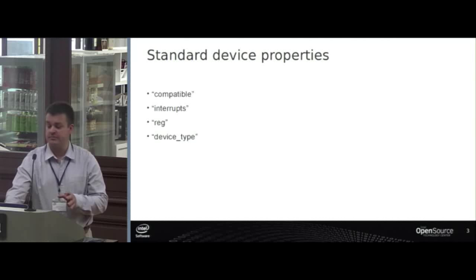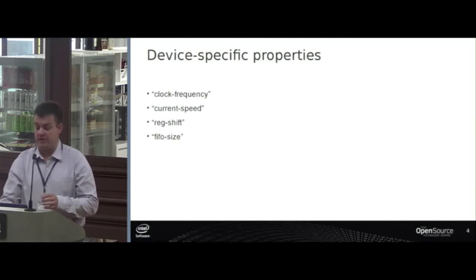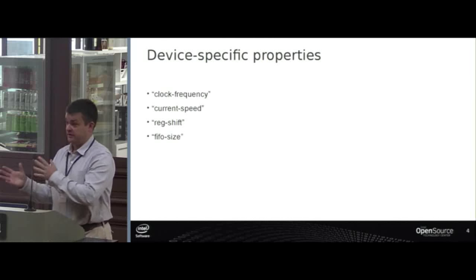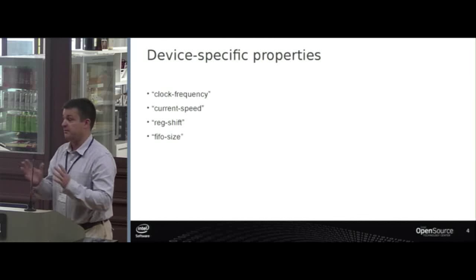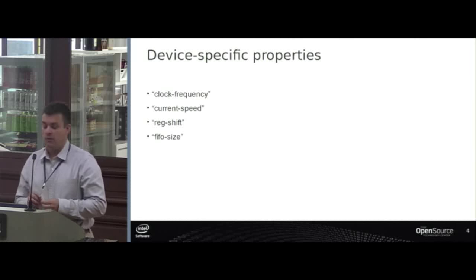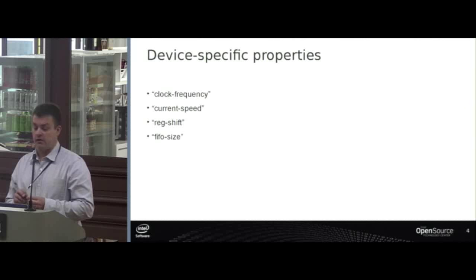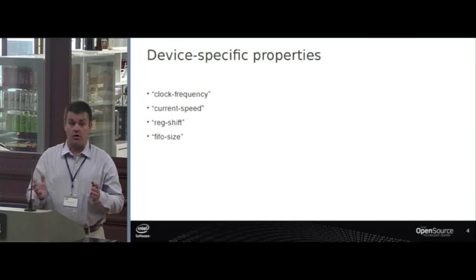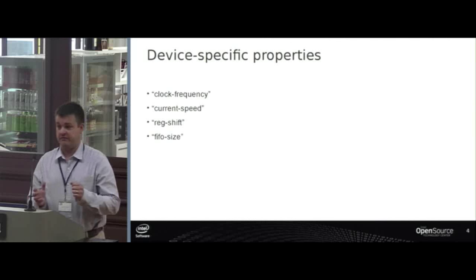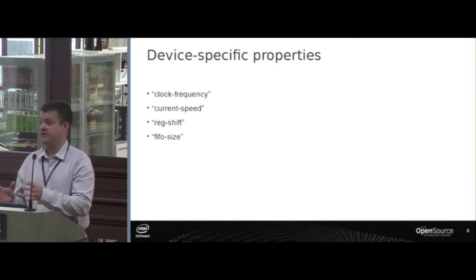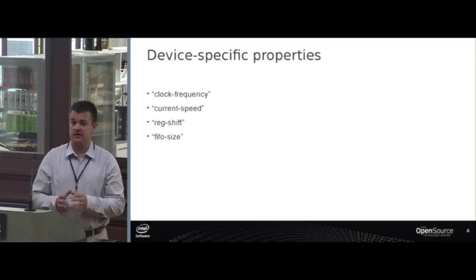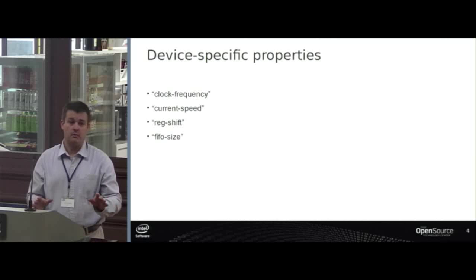So we have the standard device properties and we also have device-specific properties. For the UART example, which I'll keep coming back to, we have things like the clock frequency. On a PC, you have the standard serial ports and they have a clock frequency which is always the same — otherwise things just won't work.